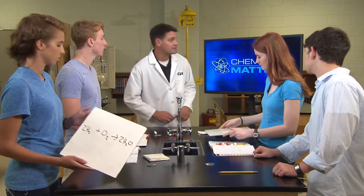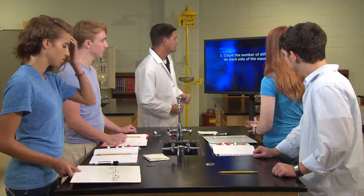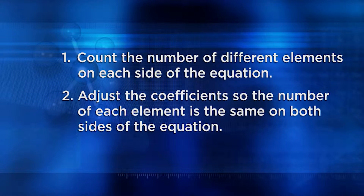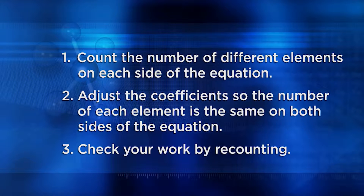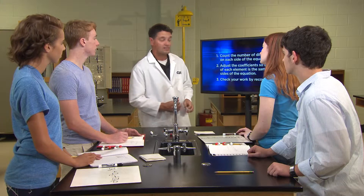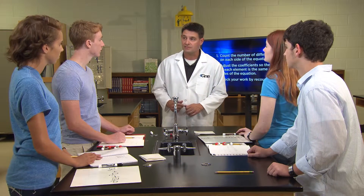There are three major steps to balancing chemical equations. First, count the number of different elements on each side of the equation. Second, adjust the coefficients so that the number of each element is the same on both the reactant side and the product side. Third, check your work by recounting — remember the coefficient is distributed over the entire compound. For example, two water molecules means four hydrogen atoms and two oxygen atoms.